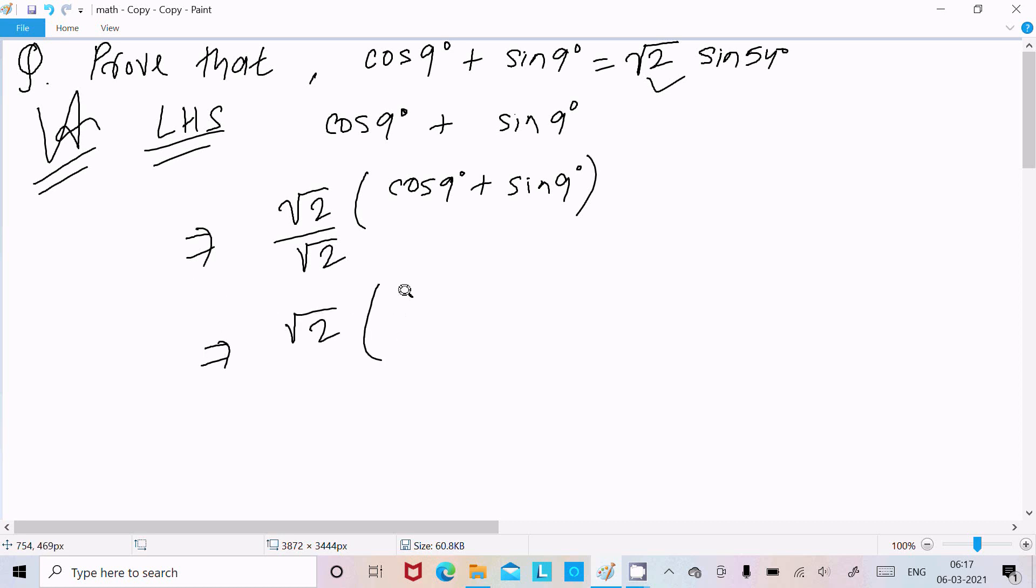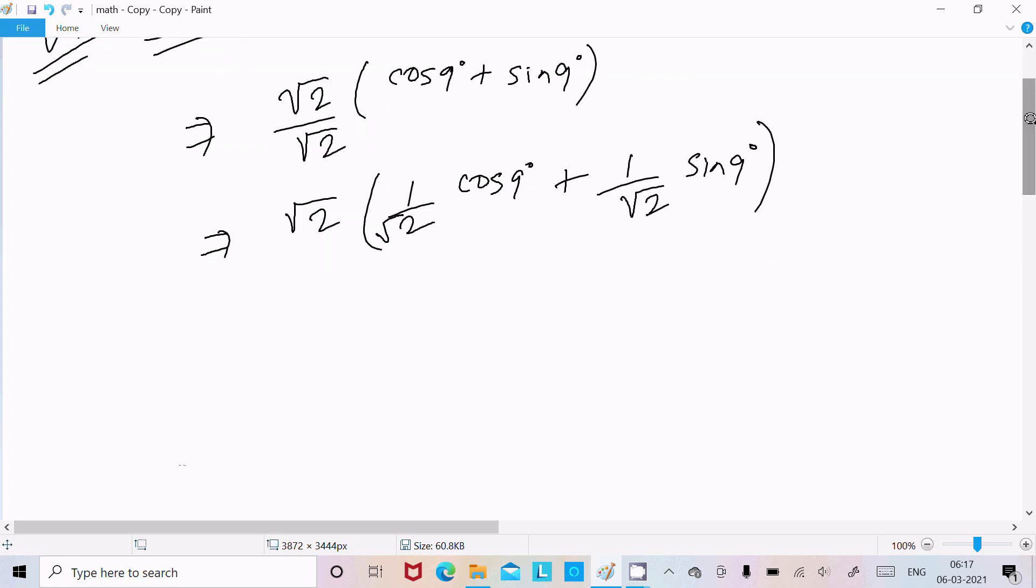So now we can write √2, here 1/√2 cos 9, here 1/√2 sin 9°.